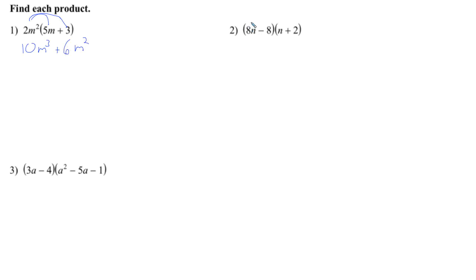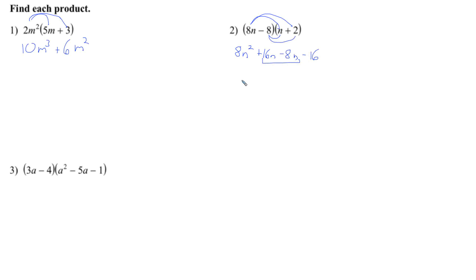Here we have the distributive property again — we can use FOIL. First: 8n times n is 8n squared. Then 8n times 2 is 16n. Next, negative 8 times n is negative 8n, and negative 8 times 2 is negative 16. The two middle terms are like terms, so we combine them: 8n squared plus 8n, because 16 minus 8 is 8, minus 16.